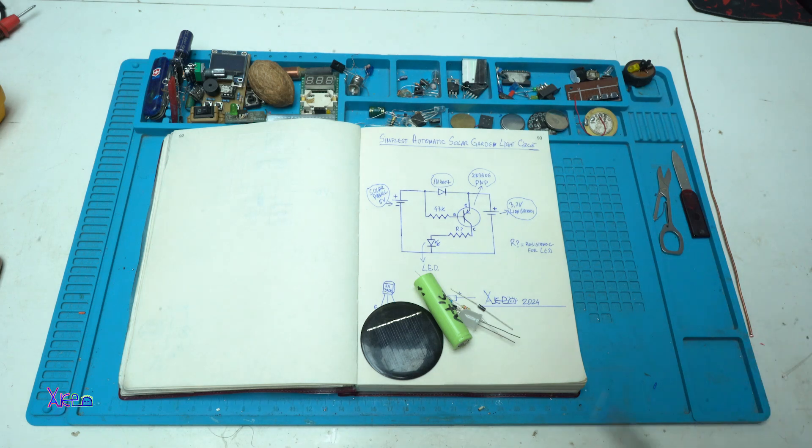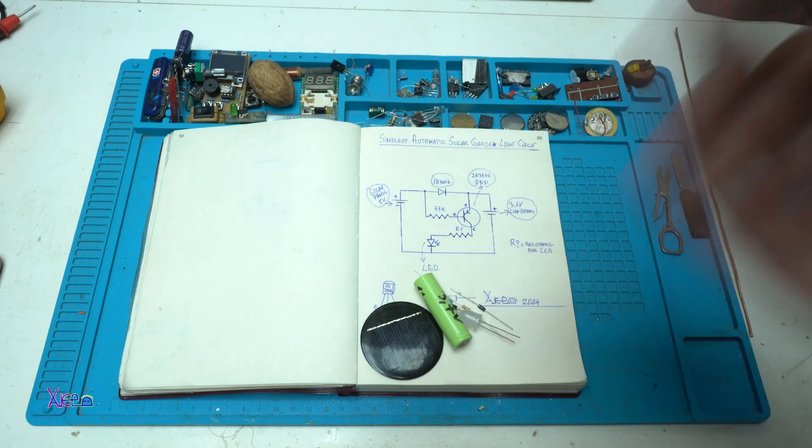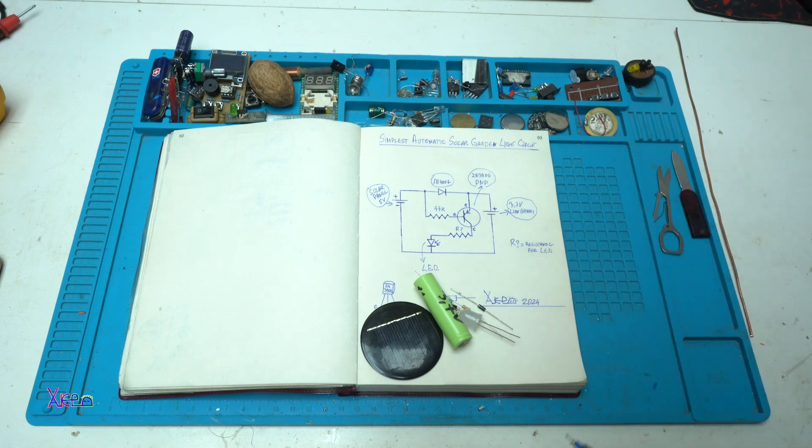Hello GeekTubers and welcome back to my channel. In today's video, I'm going to show you how you can make the simplest automatic solar garden light circuit with charging using only 7 components. Let's start.